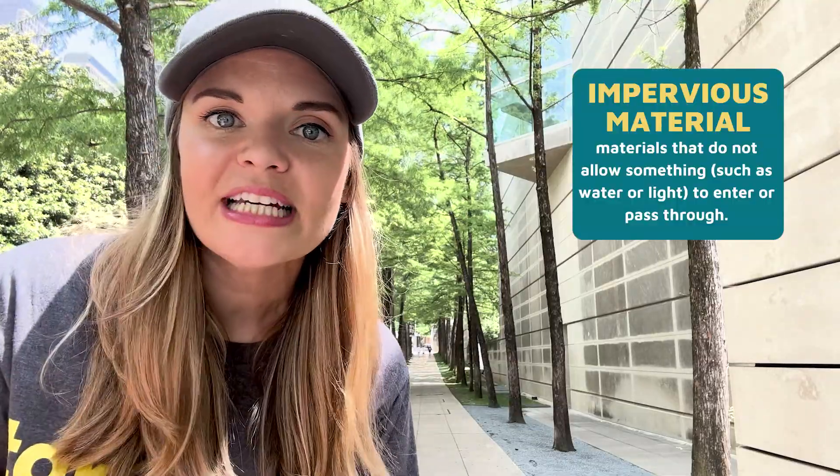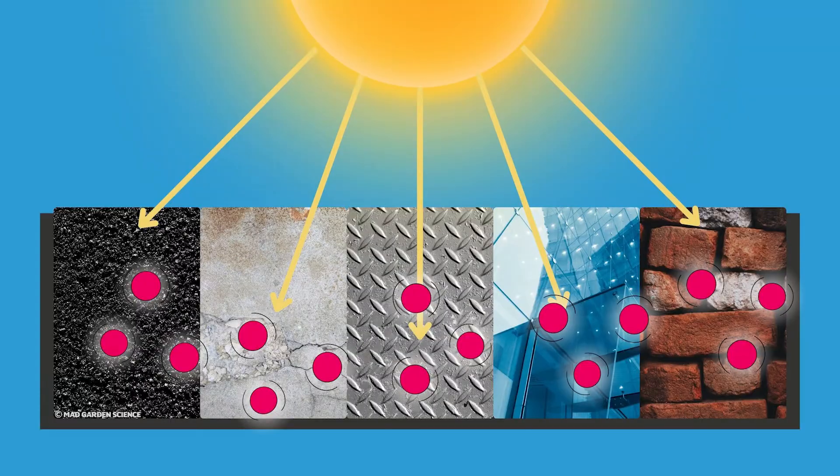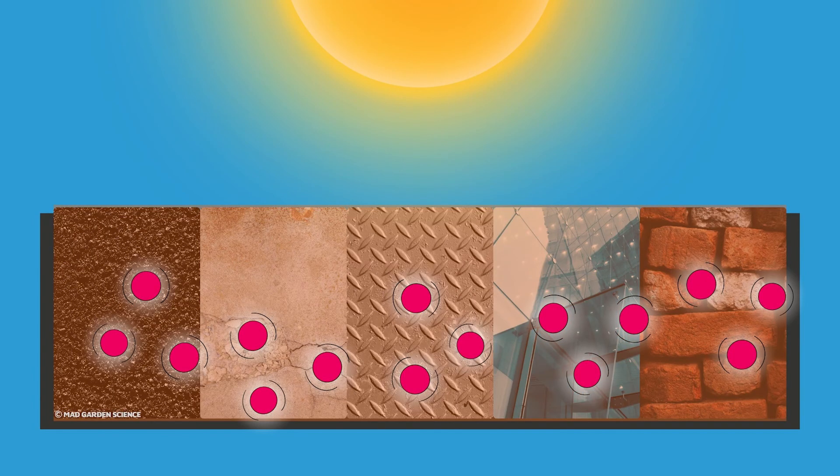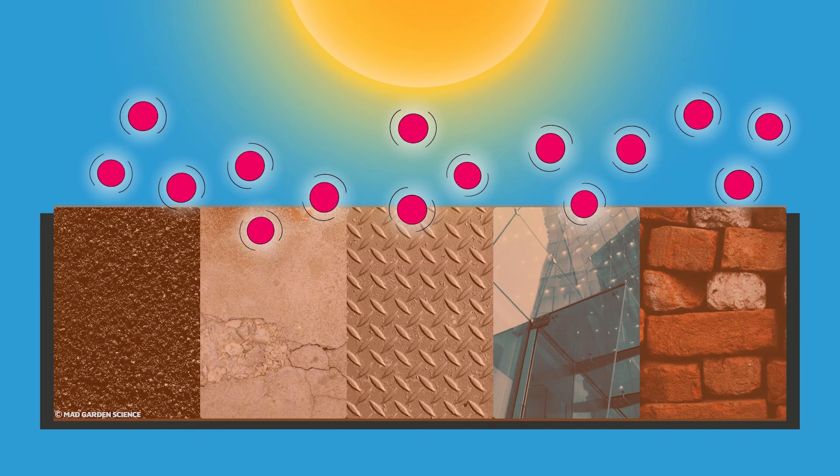This concrete sidewalk is an impervious material — water is not going to flow through it. It makes sense that urban man-made structures are made with impervious materials, but there is a downside. Because water can't flow through surfaces like steel, brick, or cement the way it can through a plant, these surfaces have nothing to cool them down. All the absorbed energy from the sun goes into warming the surface and releasing energy by conduction, convection, and radiation back into the surrounding air.